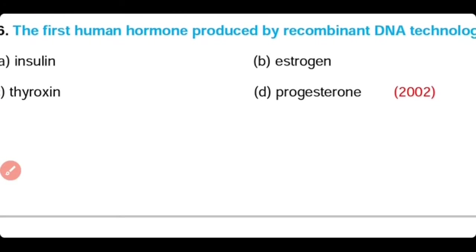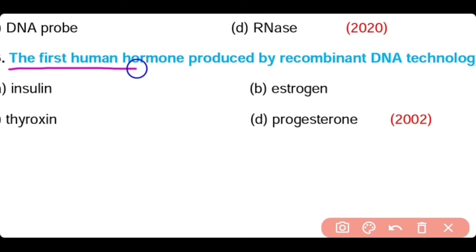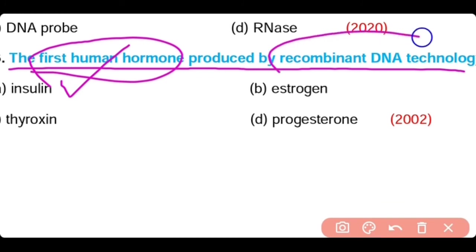Question 16: The first human hormone produced by recombinant DNA technology is — insulin, estrogen, thyroxin, or progesterone? Option A is correct. Insulin is the first hormone produced by recombinant DNA technology.